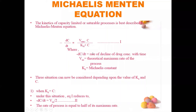We consider three situations depending on the values of Km and C. Situation 1: when Km equals C. In the denominator, Km is replaced by C, giving C + C = 2C. The C in the numerator cancels with one C in the denominator, so the equation becomes: −dC/dt = Vmax / 2. The rate of the process equals half of its maximum rate.